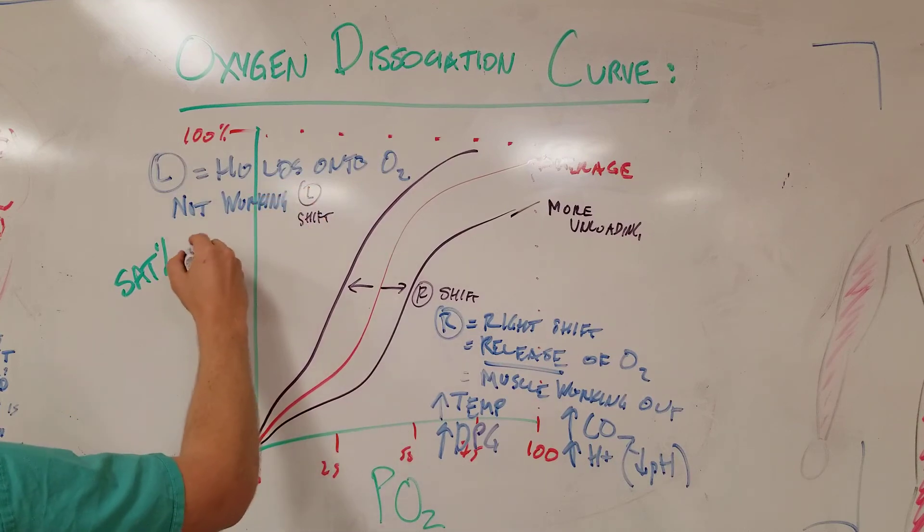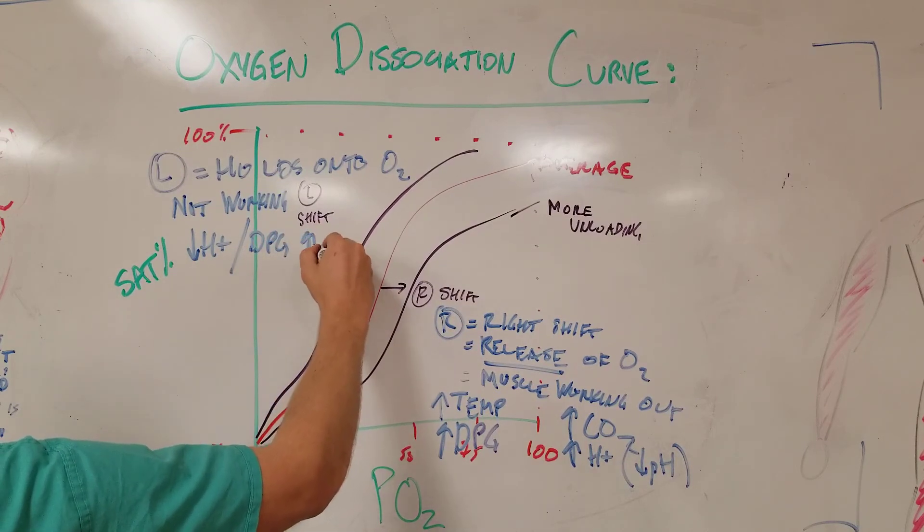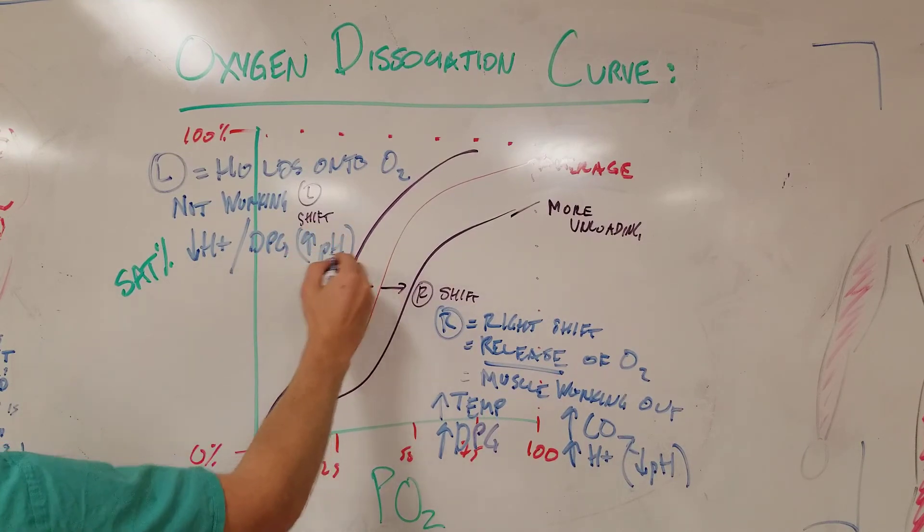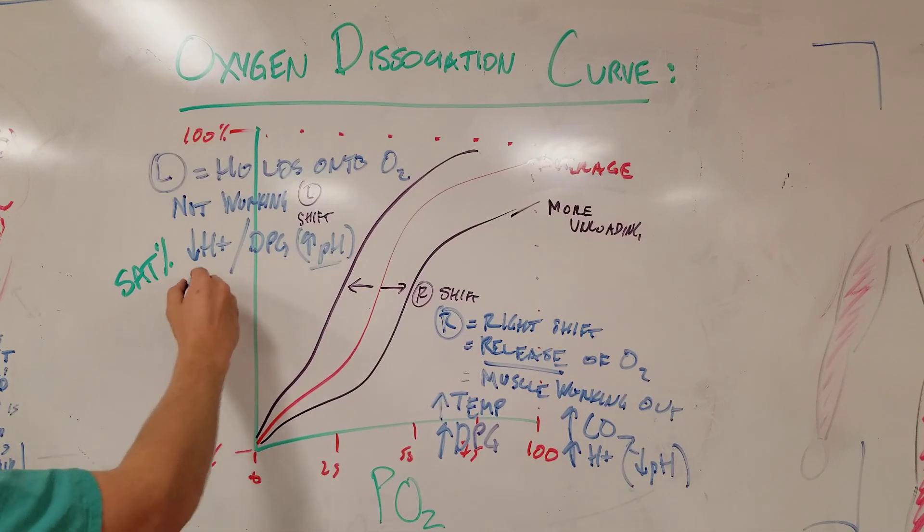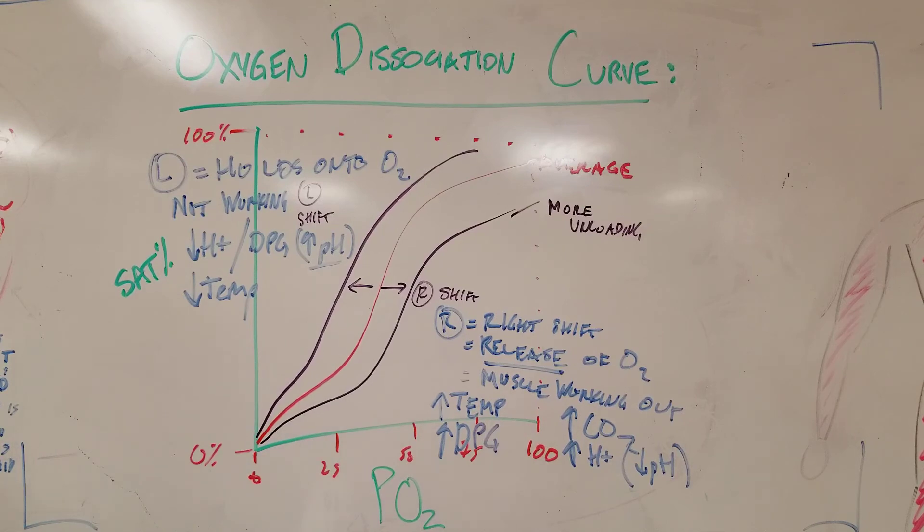And that's going to be things like a decreased amount of acid or an increased pH. Increased pH is more basic. You're going to see a decreased temperature will cause a left shift or decreased offloading. And then lastly, you'll see a decreased amount of CO2.